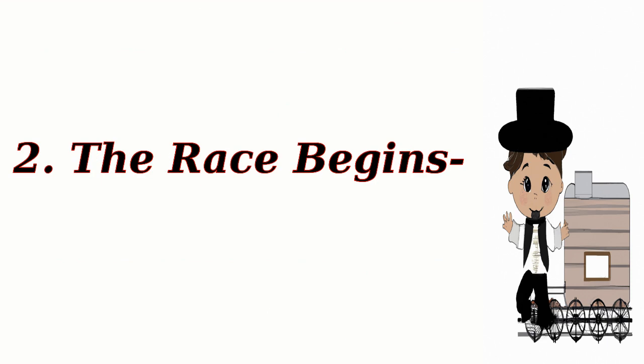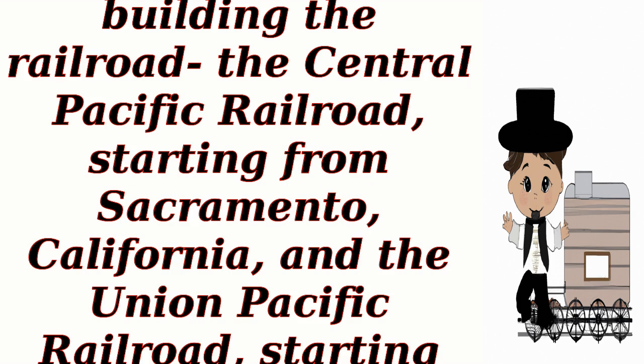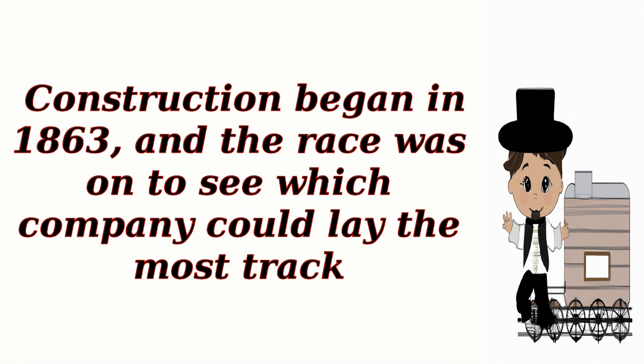The Race Begins. Two companies took up the challenge of building the railroad: the Central Pacific Railroad, starting from Sacramento, California, and the Union Pacific Railroad, starting from Omaha, Nebraska. Construction began in 1863, and the race was on to see which company could lay the most track.